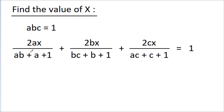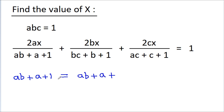In the second equation the denominators differ across the three terms. For the first term the denominator is ab + a + 1. Now we can write 1 as abc, so ab + a + 1 becomes abc + a + 1, and taking a common gives bc + b + 1.